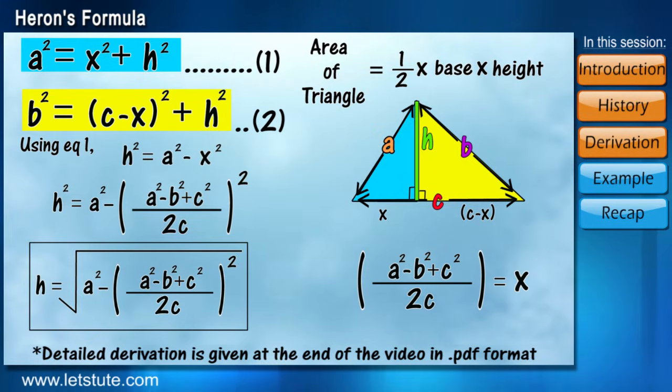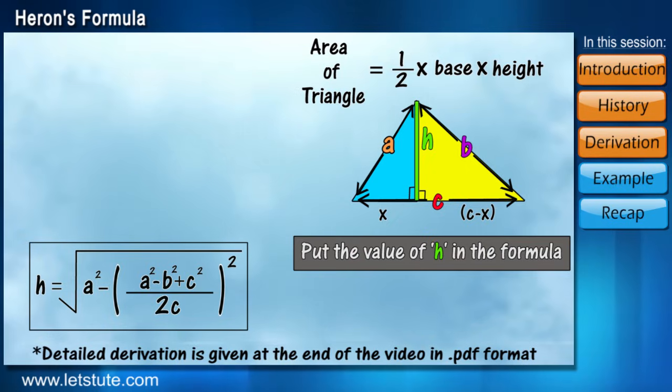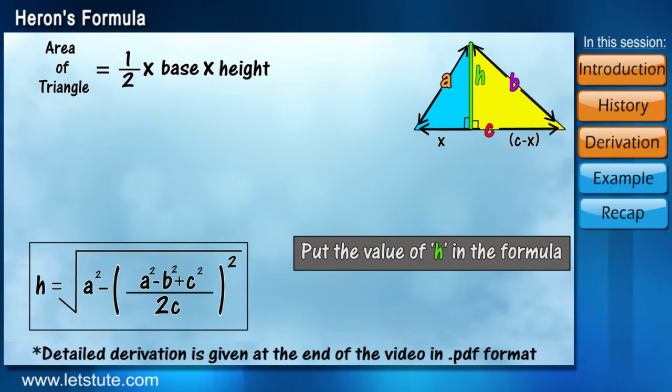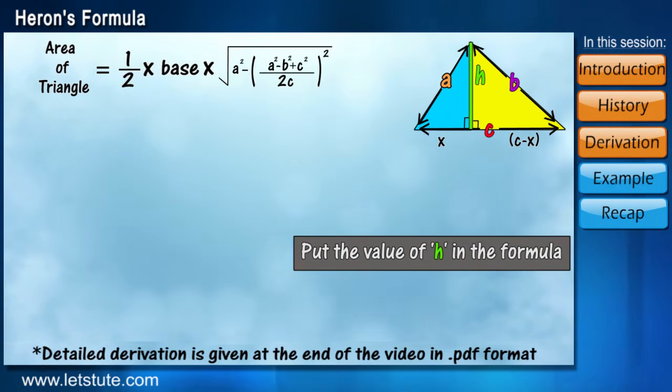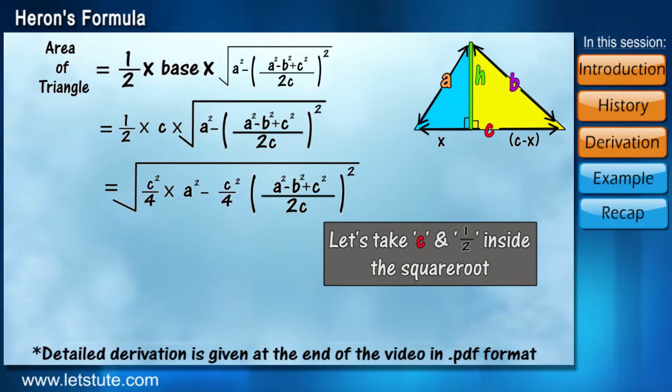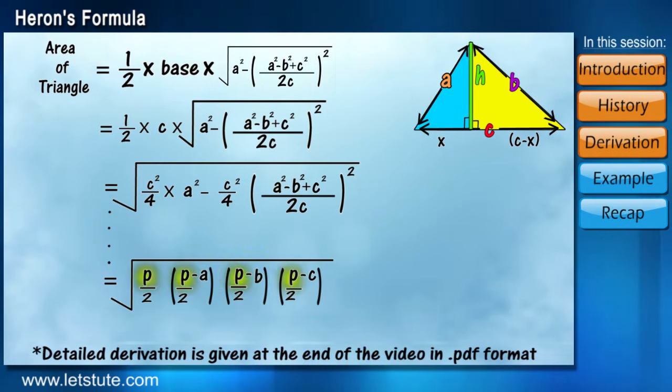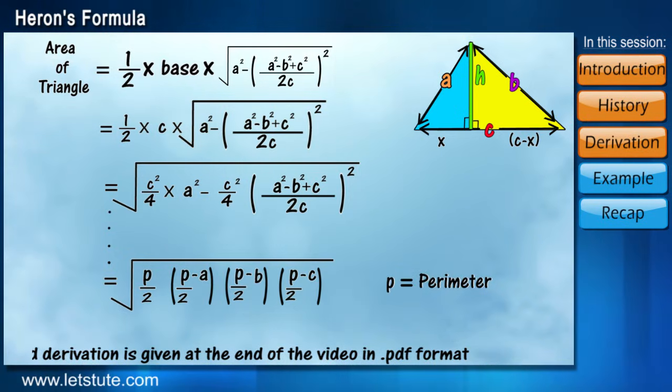Now, all we have to do is put the value of h in the formula half into base into height. Let's take c and half inside the square root. Now, after solving it further, we come to a step where we only have perimeter and sides in the formula.